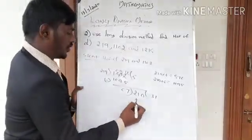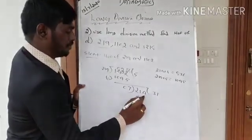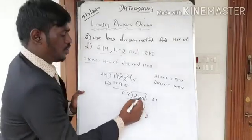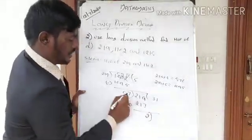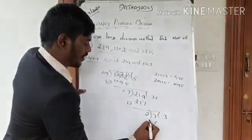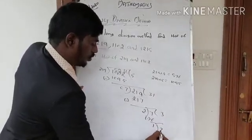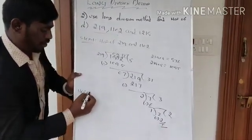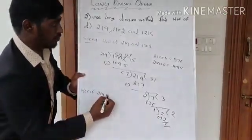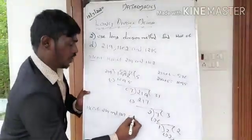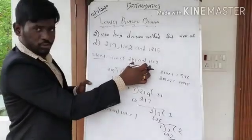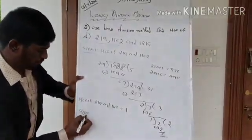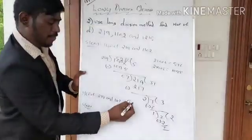Now 7 becomes the divisor and 219 becomes the dividend. 7 goes into 219 — 7 thirty-ones are 217. Subtract: 9 minus 7 is 2, 1 minus 1 is 0, 2 minus 2 is 0. The remainder is 2. Continue: 7 goes into 2 with remainder — eventually the remainder comes to 0 and the HCF of 219 and 1102 is 1.